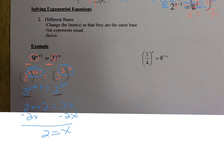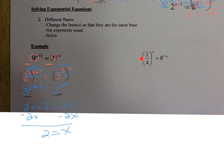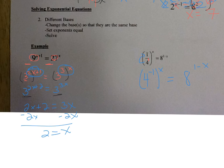This one is a little more challenging because one of the bases is a fraction. It's 1/4 to the x power equals 8 to the 1 minus x power. Whenever you have a fractional base, you want to change it so it's not a fraction. To move a number from the denominator up to the numerator, you change the sign of its exponent. 4 has an exponent of 1, so moving it to the numerator gives 4 to the negative 1, raised to the x power. Power to a power: that becomes 4 to the negative x.